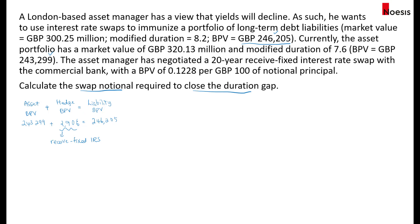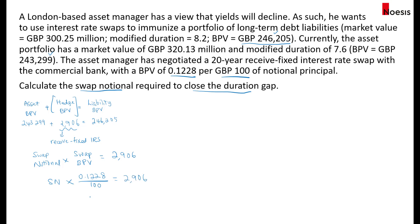To get this amount of BPV from the IRS, we are given that for every 100 pounds of notional the BPV is 0.1228. The HBPV can be expanded as: swap notional multiplied by the swap BPV equals 2,906. The swap BPV is 0.1228 per 100 pounds notional, so dividing by 100, the swap notional equals 2,906 multiplied by 100 over 0.1228, which gives approximately 2,366,450 pounds.